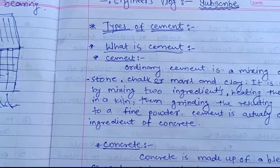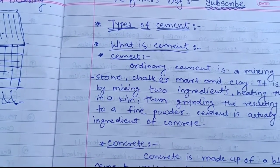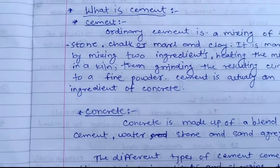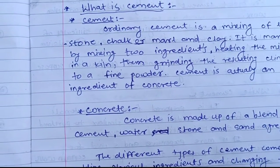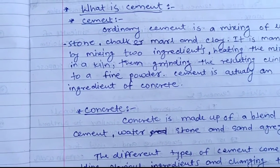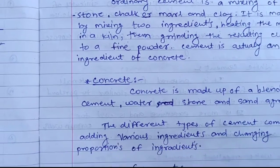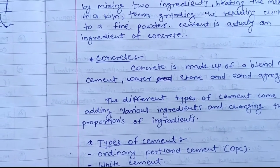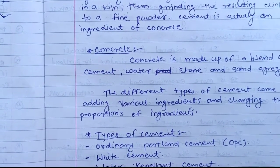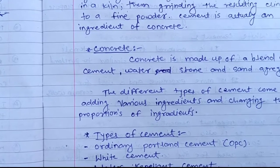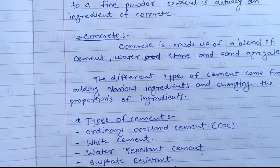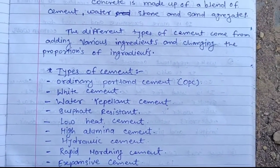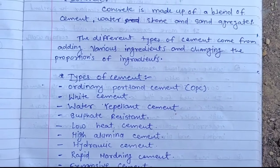Concrete is made up of a blend of cement, water, stone, and sand aggregates. The different types of cement come from adding various ingredients and changing the properties of those ingredients.